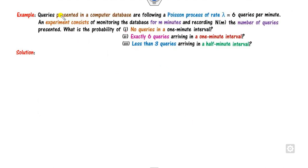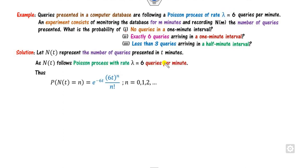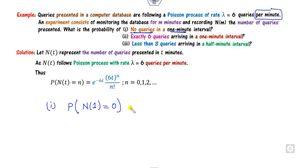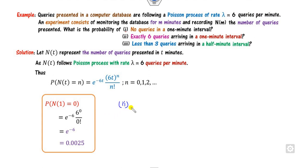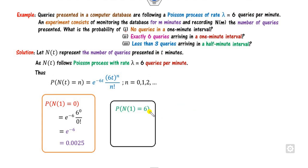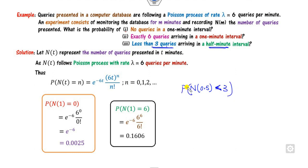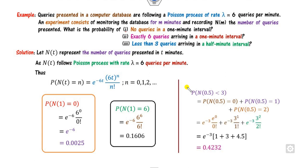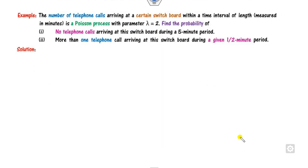Example 6: Queries presented to a computer system follow a Poisson process. Part 1: Find the probability of no query in 1 minute — 1 minute is the time, n=0 is the count, so P(N(1) = 0). Part 2: Probability of exactly 6 queries in 1 minute — P(N(1) = 6). Part 3: Fewer than 3 queries in half a minute (0.5 minutes) — expand for n = 0, 1, 2 and sum the probabilities.